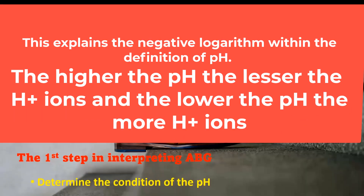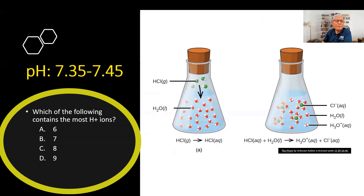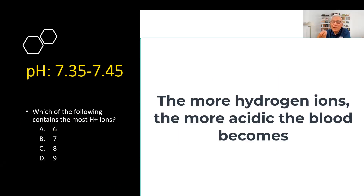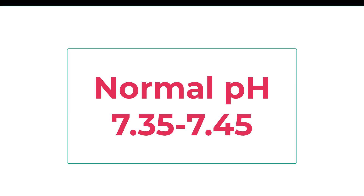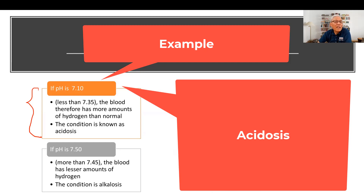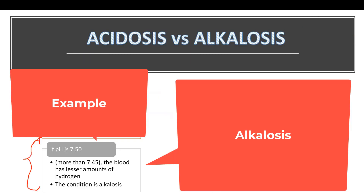The first step in determining whether a patient has an abnormality in acid-base balance is to look at the pH. Which of the following contains the most hydrogen ions? The most acidic one, because it has more hydrogen ion. The pH is a scale — normal is between 7.35 and 7.45. If the pH is 7.10, that is less than 7.35, meaning the patient is in acidosis. If the pH is 7.50, the patient has less hydrogen in the blood, and the condition is known as alkalosis.